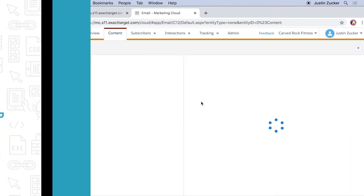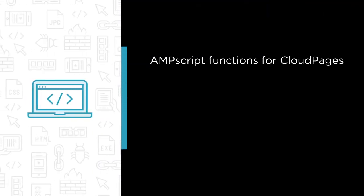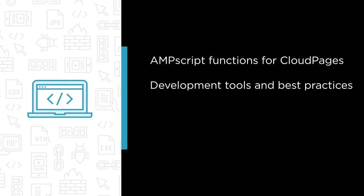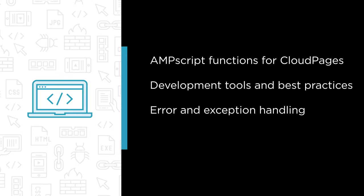Some of the major topics we'll cover in this course will be AMPscript functions for Cloud Pages — what functions are designed specifically for Cloud Pages and other commonly used functions within Cloud Pages. Development tools and best practices, using tools like Content Builder to make development versioning easier, as well as functions to pull content from outside sources. Error and exception handling: how to use AMPscript logic to handle bad or missing data, and debugging your scripts.